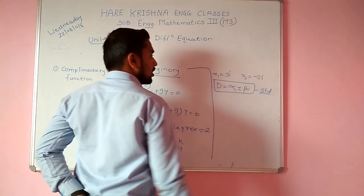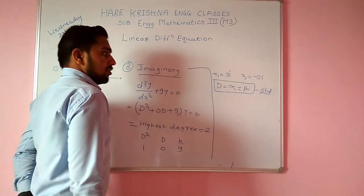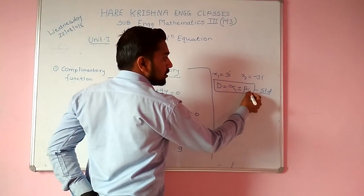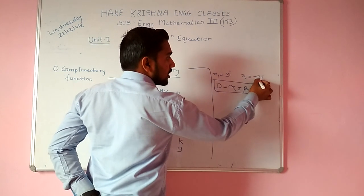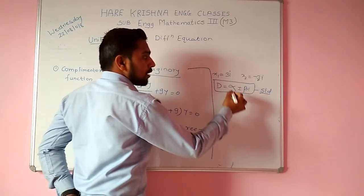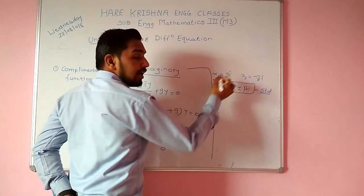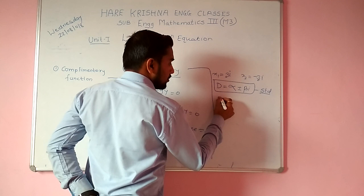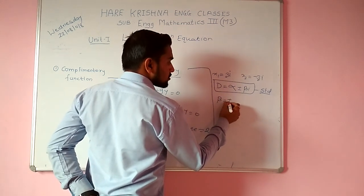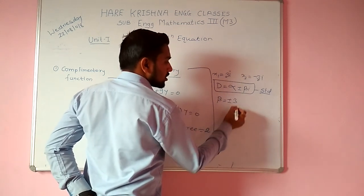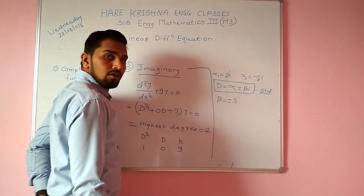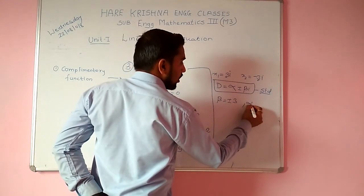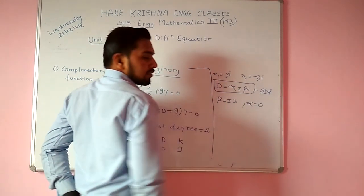This is the standard equation. Beta gives us ±3, and alpha we take as 0, since there is no real part in the roots.